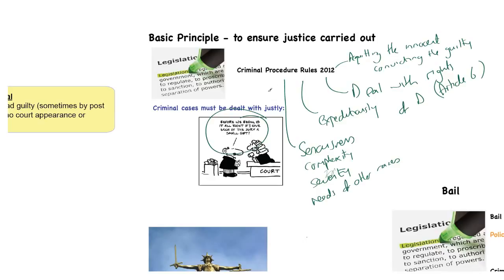I would advise you in your toolkit as lawyers to have digital copies of all of this legislation to look through it and get some idea about what it contains. You can do that through the law bank, but also through any of the official government websites or places like Bailii. The links to all of those places are on the law bank. The website is www.thelawbank.co.uk — visit there and download the legislation to look at it for yourself.